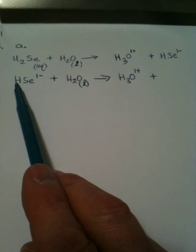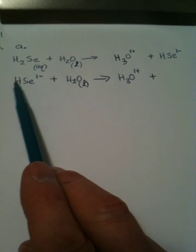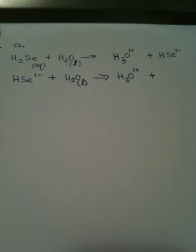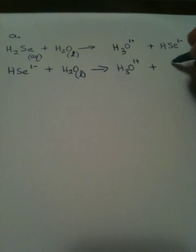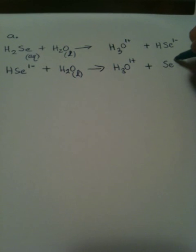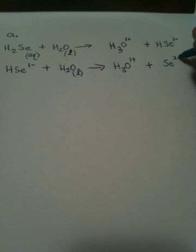And the thing that's going to be left is what this guy looks like, with one more hydrogen gone. When we take the hydrogen away, we also take away a positive charge, which makes it go more negative. And so, now we're going to have Se2-.